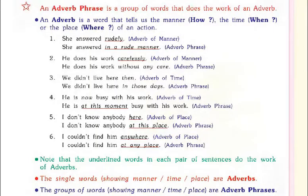Now we will see an adverb phrase. An adverb phrase is a group of words that does the work of an adverb. An adverb is a word that tells us the manner (how), the time (when), or the place (where) of an action. Koi bhi action ka time, place, or manner show karta hai — woh humara adverb hai. And when it is used as a group of words, it is called an adverb phrase.